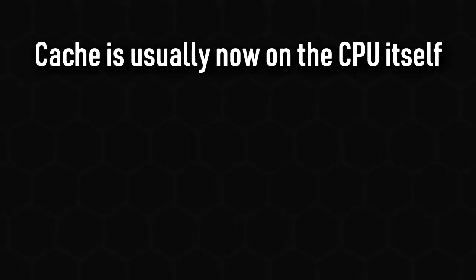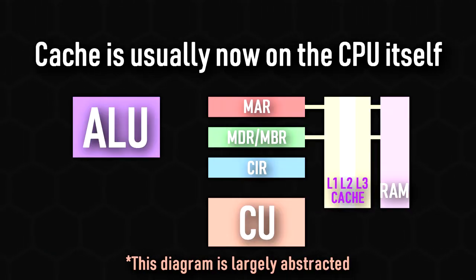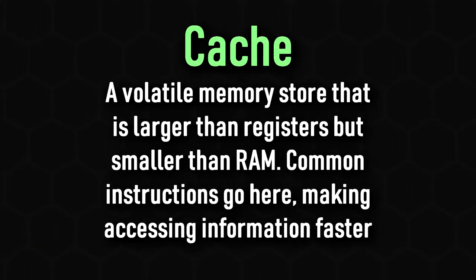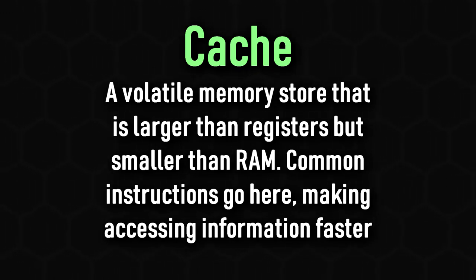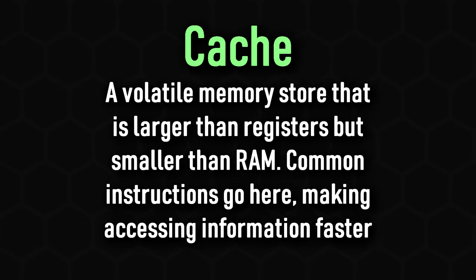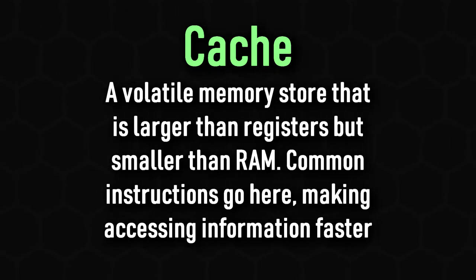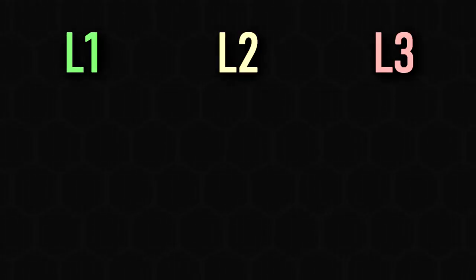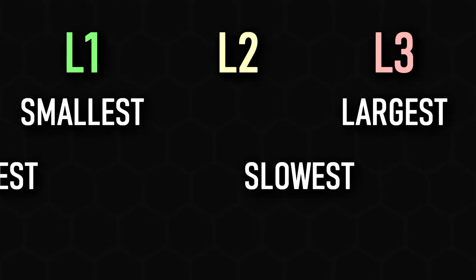In modern CPUs, cache is usually integrated onto the die, and on diagrams it lies between external RAM and registers. Cache acts as volatile memory that is much bigger than registers but much smaller than RAM, and is faster than RAM but slightly slower than registers. Cache stores commonly used instructions to cut down on fetch time, and it comes in three forms: L1, L2, and L3. L3 is the largest but also the slowest.